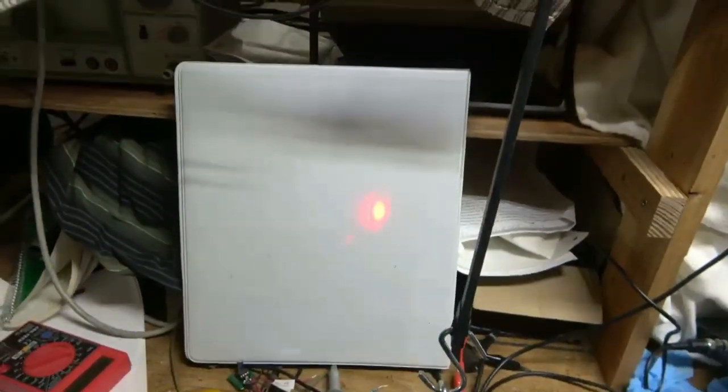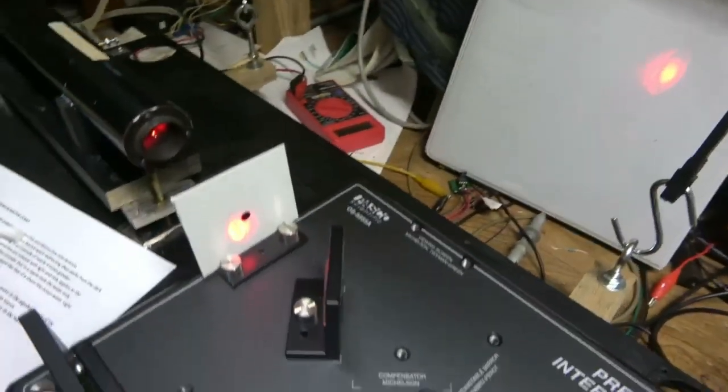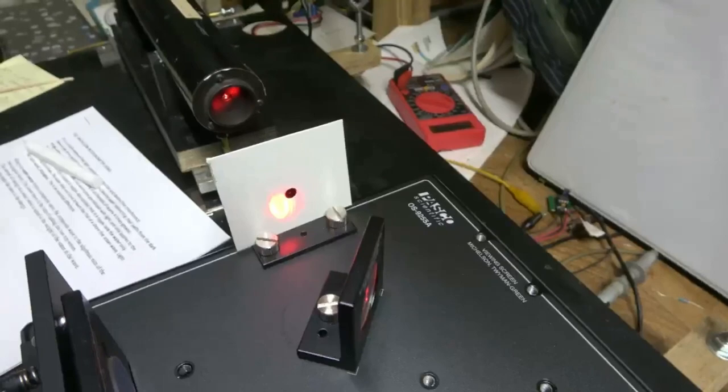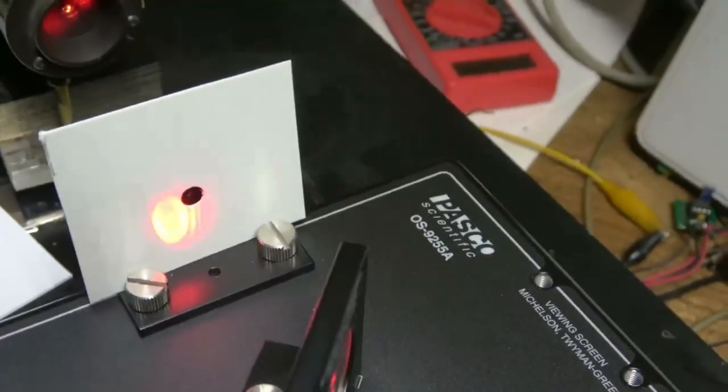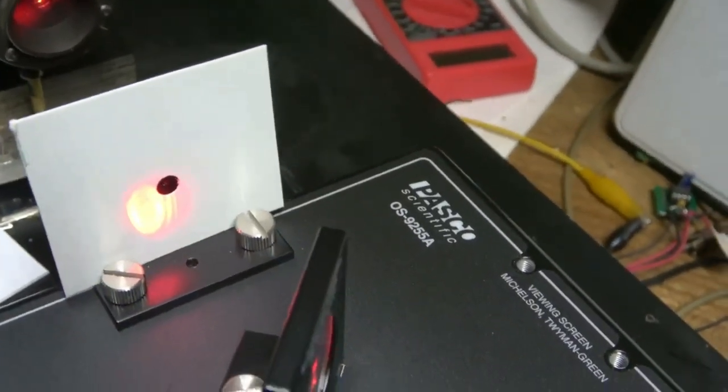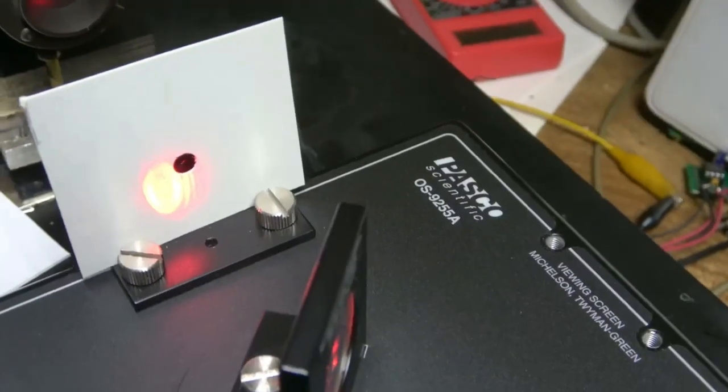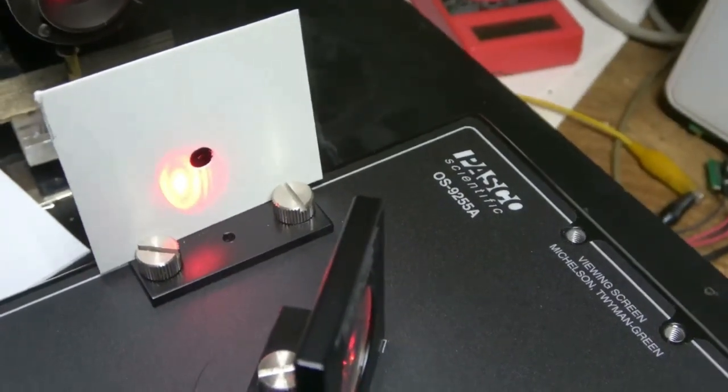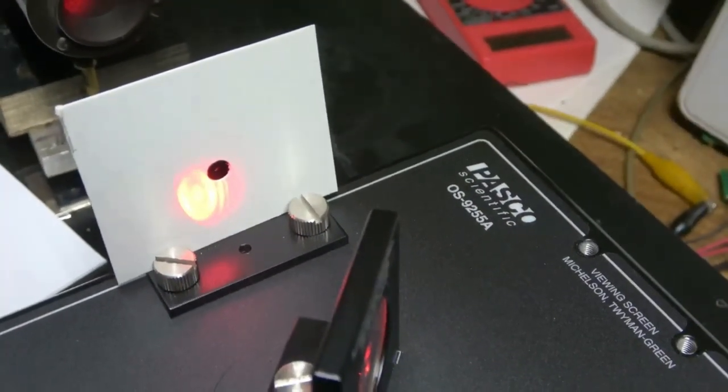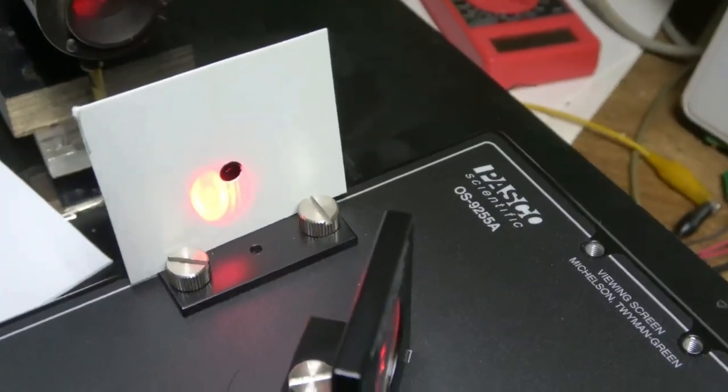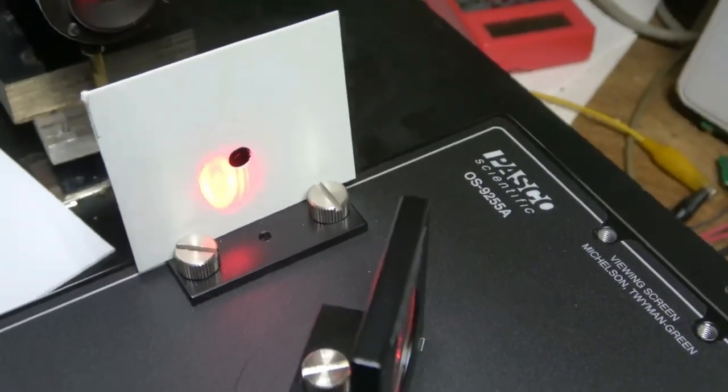So right here I have the main screen. That's the main screen. And over here I have the second screen. If you look closely, the images are reversed. Now I'll try to get a black spot in the center. That's about as dark as it's gonna get. Now I have a bright spot in the center over here. So we're reversed.